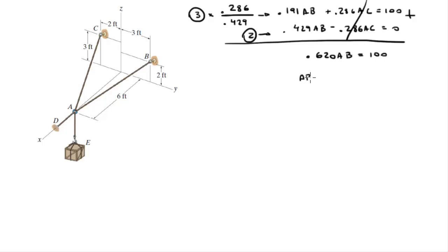And now solving from here, a, b is equal to 161.4 pounds. You plug that into equation 2 and you get that a, c is equal to 242.1 pounds. And you plug these values into equation 1 and you get that a, d is equal to 345.8 pounds. And these are the three vectors.